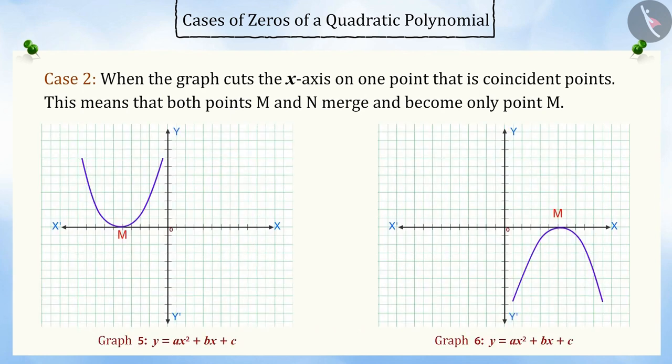Case 2: when the graph cuts the x-axis at one point, i.e., coincident points. This means that both points m and n coincide and become only point m. This means that the x-coordinate of point m is the only zero of the quadratic polynomial ax squared plus bx plus c.